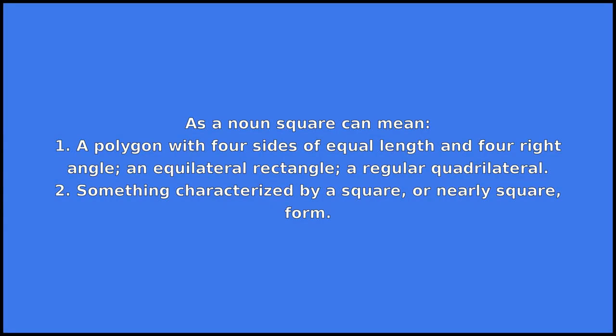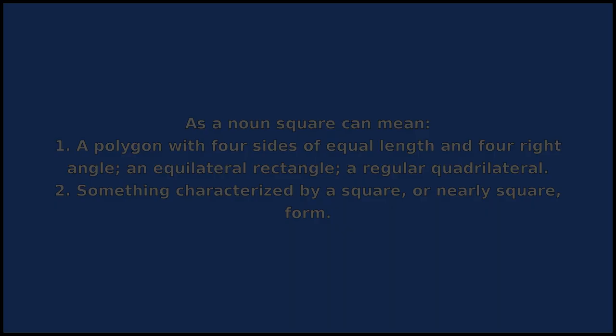As a noun square can mean: 1. A polygon with 4 sides of equal length and 4 right angles; an equilateral rectangle, a regular quadrilateral. 2. Something characterized by a square, or nearly square, form.